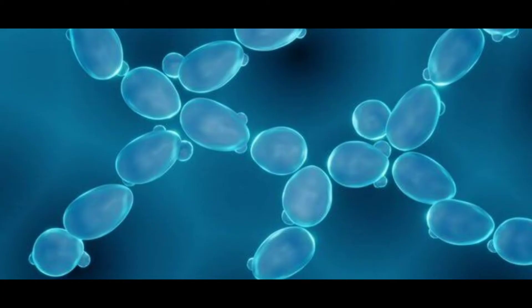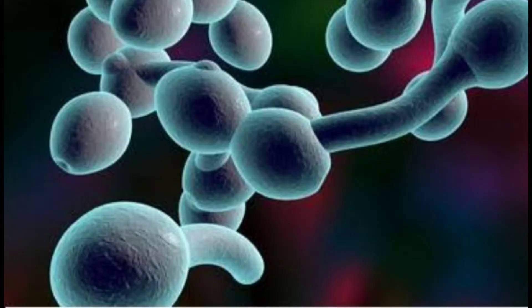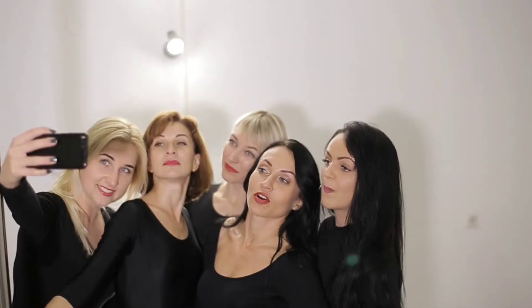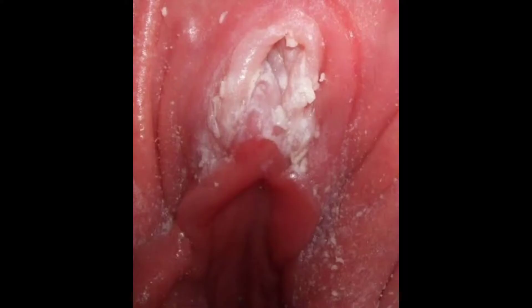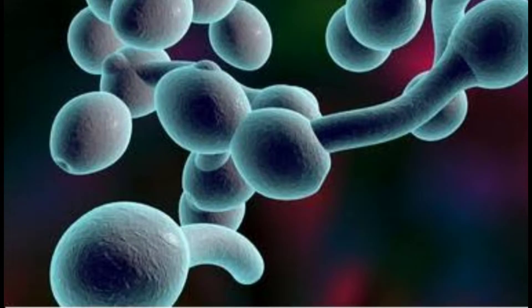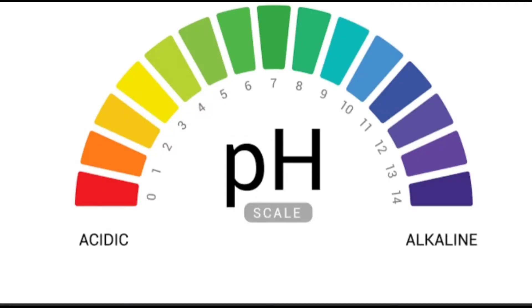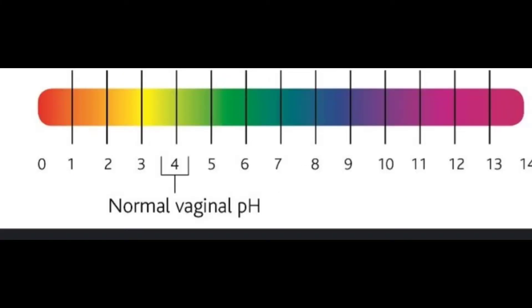Especially the species called Candida albicans, which is the usual cause of yeast infection or vaginal thrush, affecting about four out of five females. So the question is: how exactly does a yeast infection happen? Candida albicans can change in shape — normally they are round in shape.